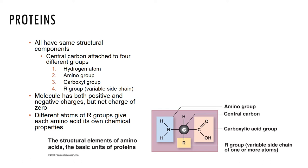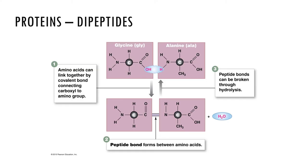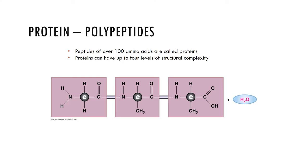The structure of an amino acid includes an amine group, a unique side group containing carbon, hydrogen, sulfur, or phosphorus, and a carboxylic acid group. A dipeptide contains two amino acids, a tripeptide contains three, and a polypeptide contains many. Polypeptides of over 100 amino acids are called proteins.